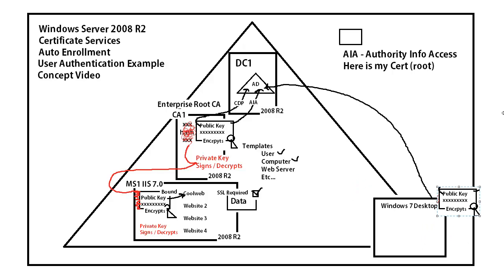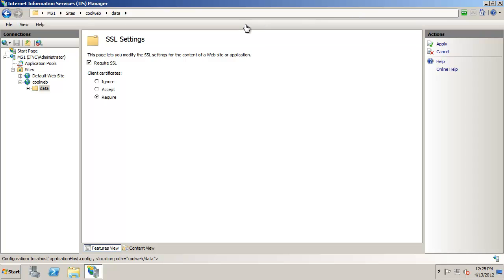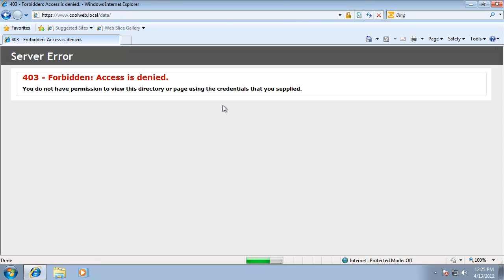In the next video, we're going to show you the steps to set up auto-enrollment so I can issue a user on that desktop computer a certificate automatically, after we have the server set to require authentication. So, we're going to leave it set to require, apply that, go back to the Windows 7 machine and verify that we're requiring authentication. I have authentication required and I need to figure out a way to get a certificate to the user currently logged into this computer. Thank you very much — we'll see you in the next video.